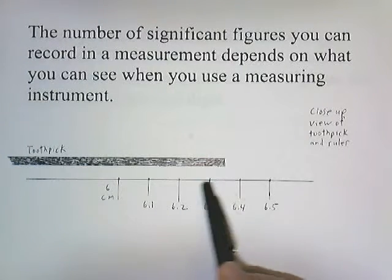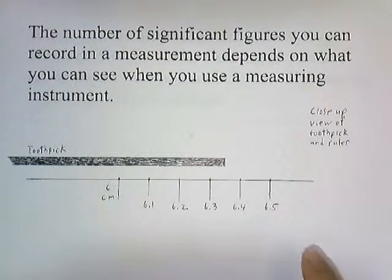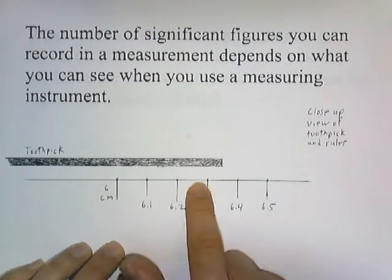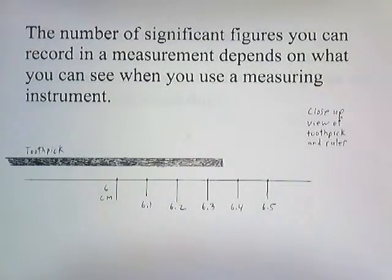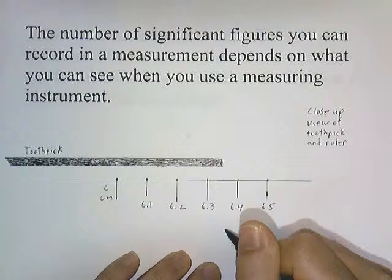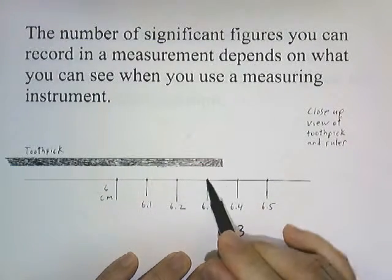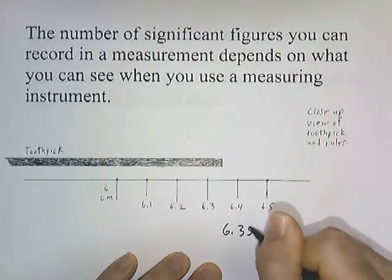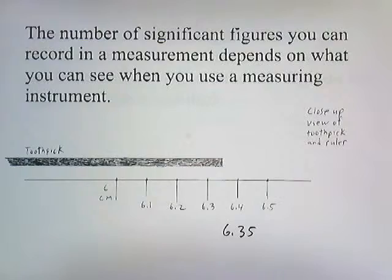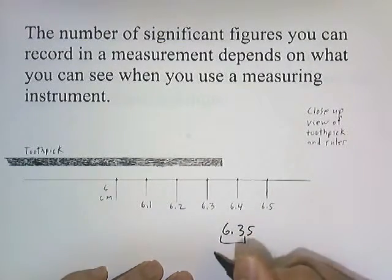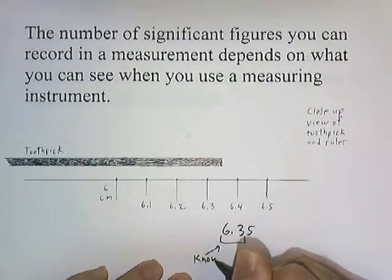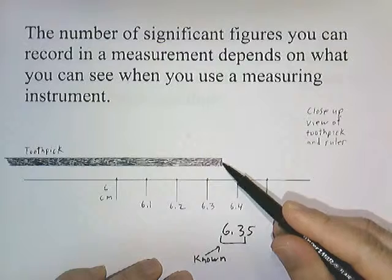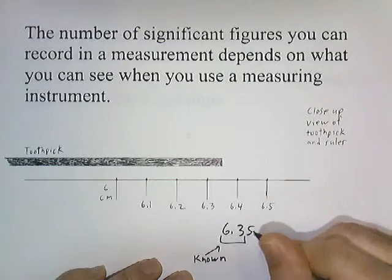More than 6.3 but less than 6.4. The last digit we could probably write as, well, we see that it's halfway in between. Halfway is 50%. So instead of calling it 6.3, we can call it 6.35 because it's 50% in between 6.3 and 6.4. We'll put a 5 there to indicate that it's 50% in between the two. These two numbers, 6 and 3, we can clearly see. But this 5 right here, this 50%, it's an estimate. We are estimating that it's about 50% over.